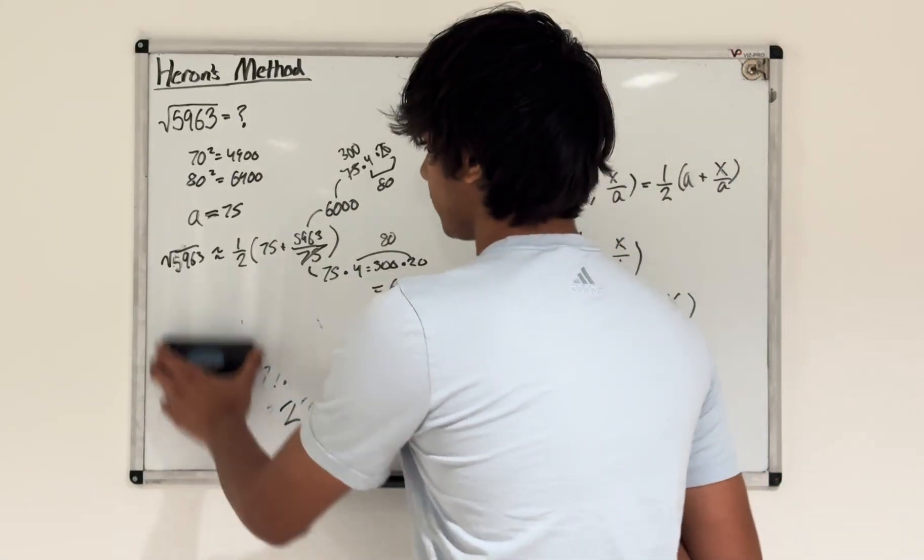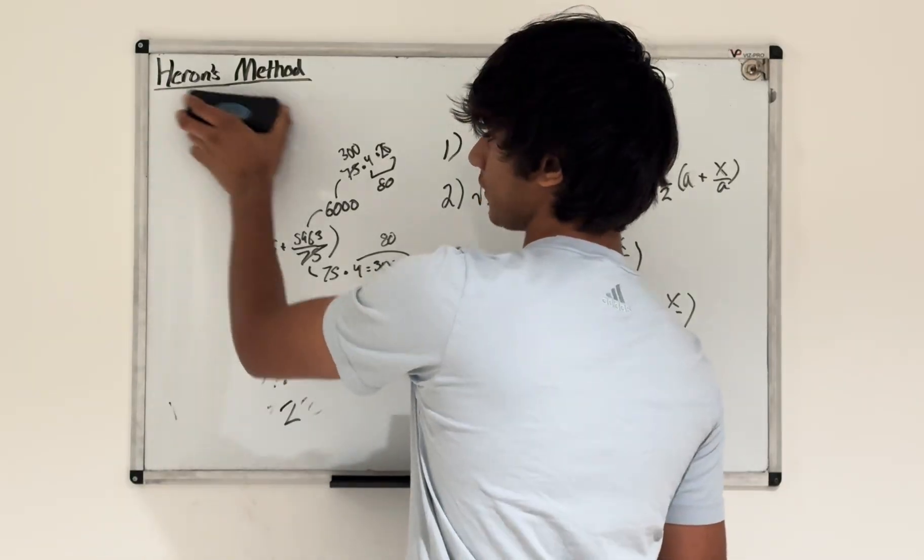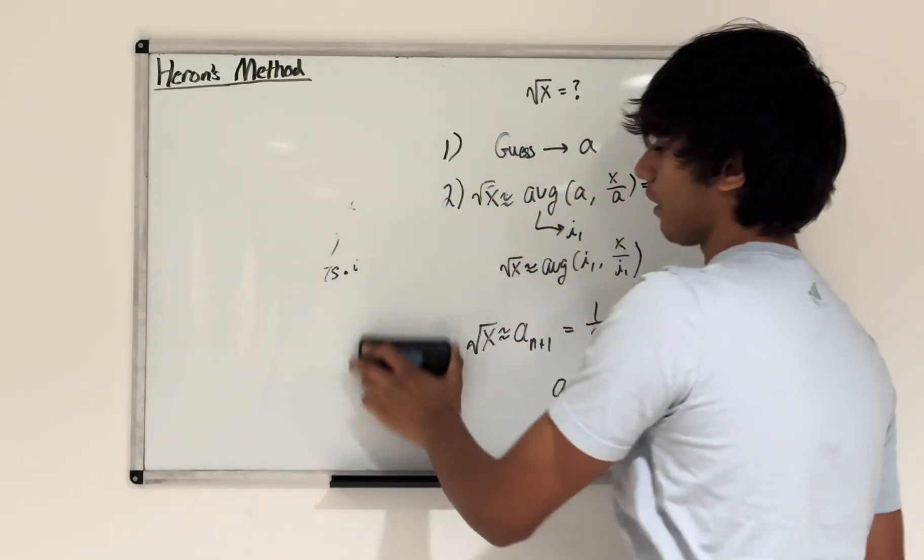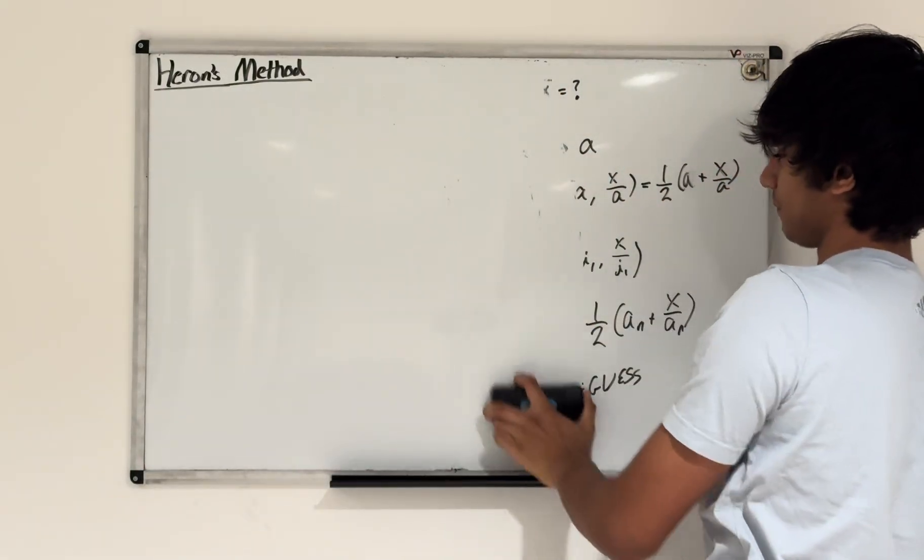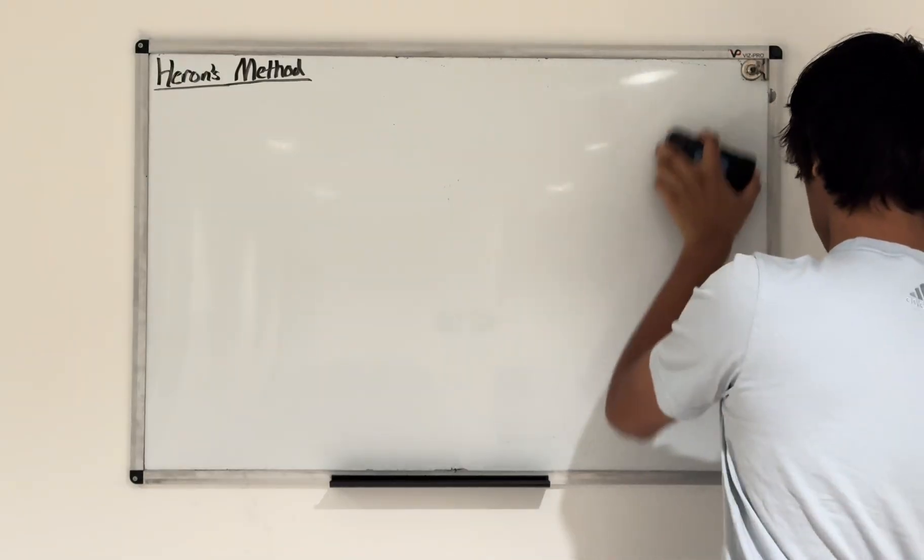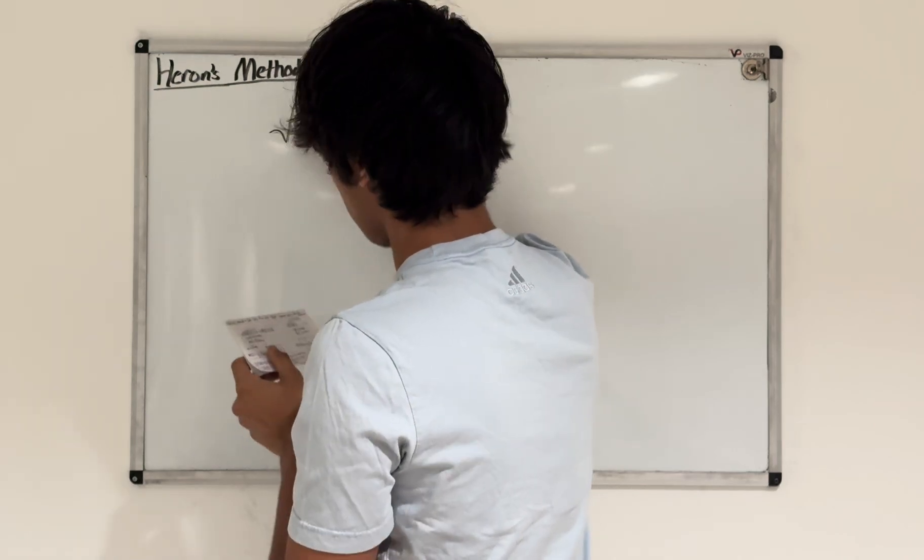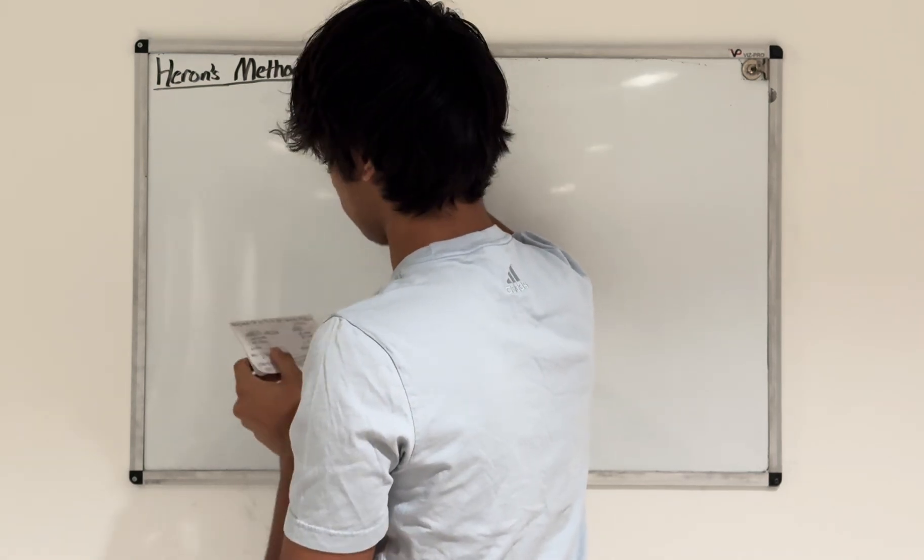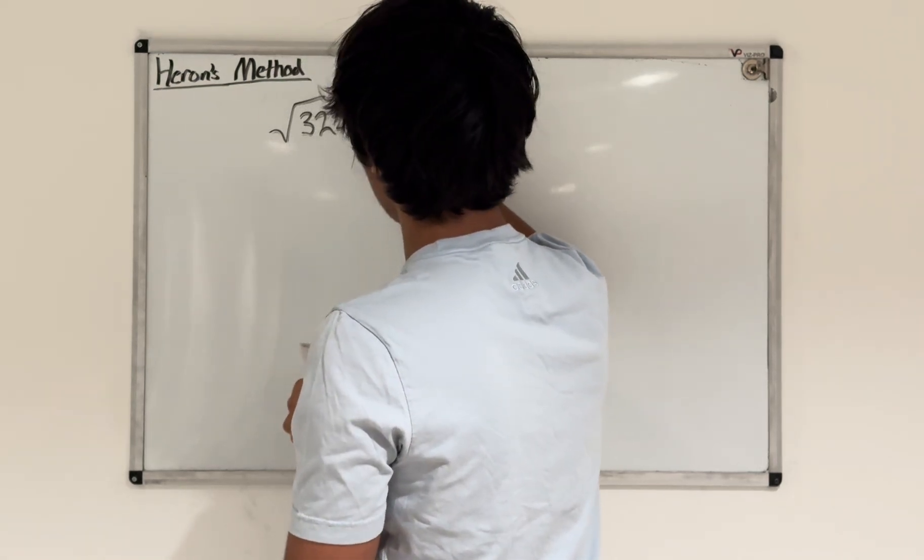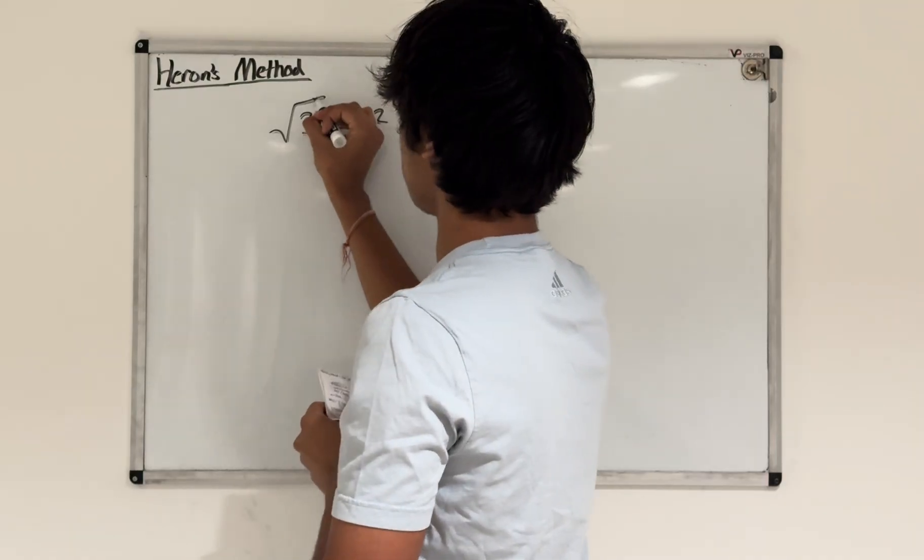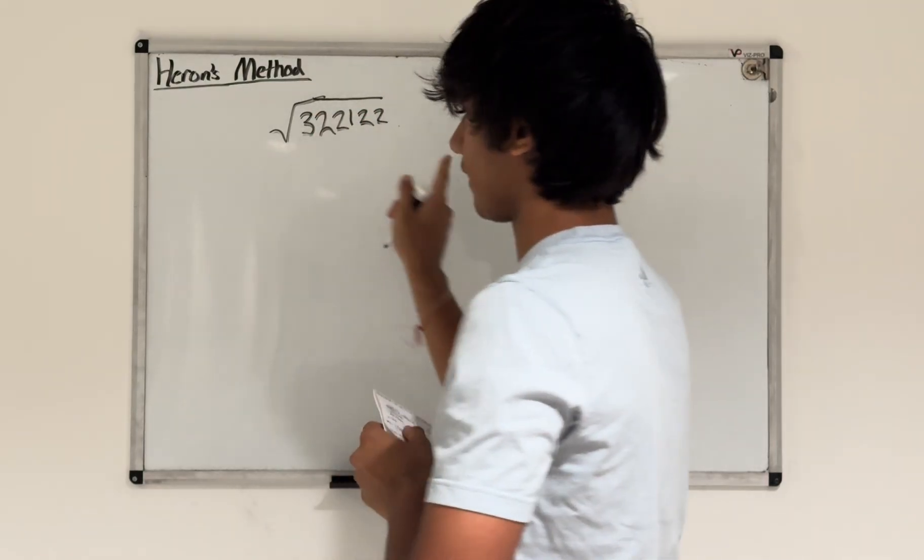Let's try one more problem just so we can kind of settle it in. This one's going to be a little bit harder, and it's going to be a little bit more off, but it's also a huge number. So let's say we have the question to ask the square root of 322,122. We want to find that value.